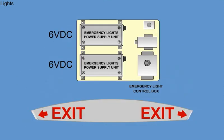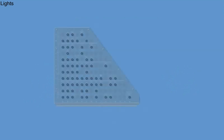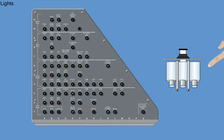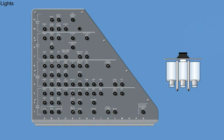The emergency lighting supply is obtained from separate 6-volt battery packs, which are charged from the 28-volt DC supply. Individual circuits are protected by ambient temperature-compensated thermal push-pull circuit breakers.